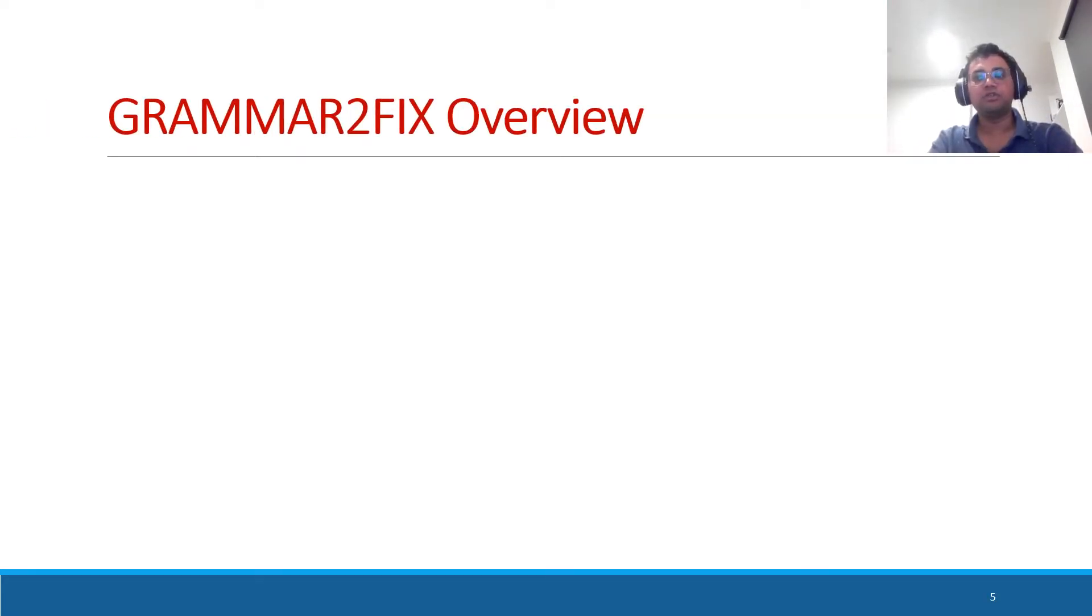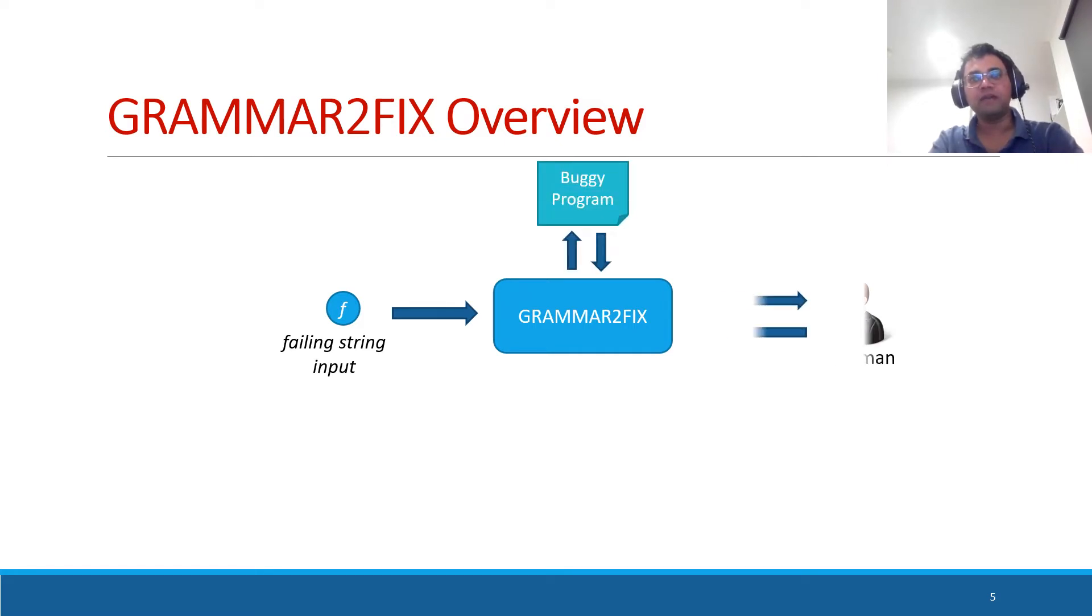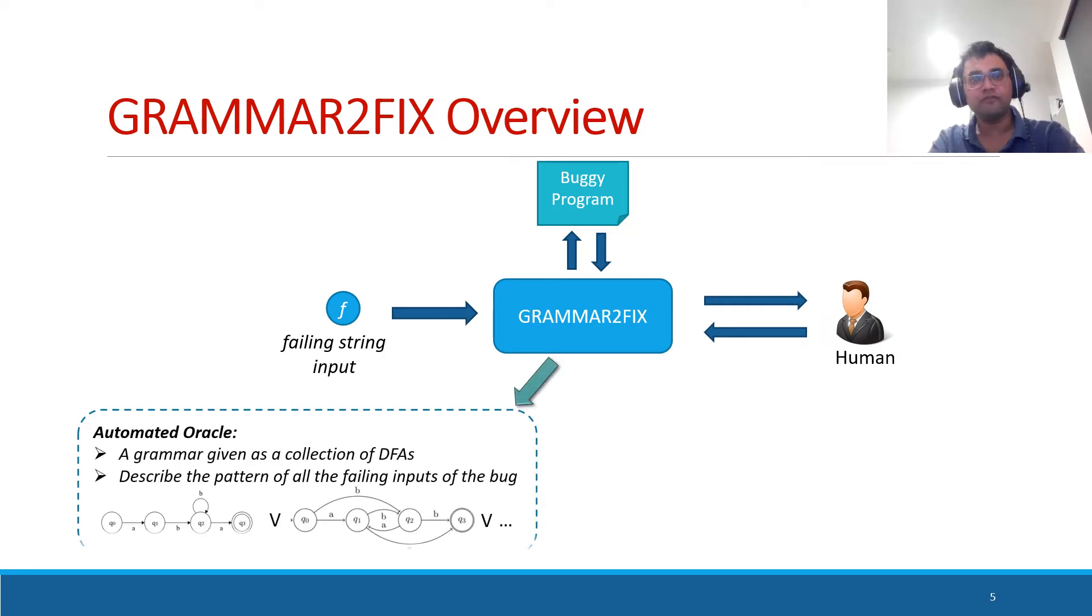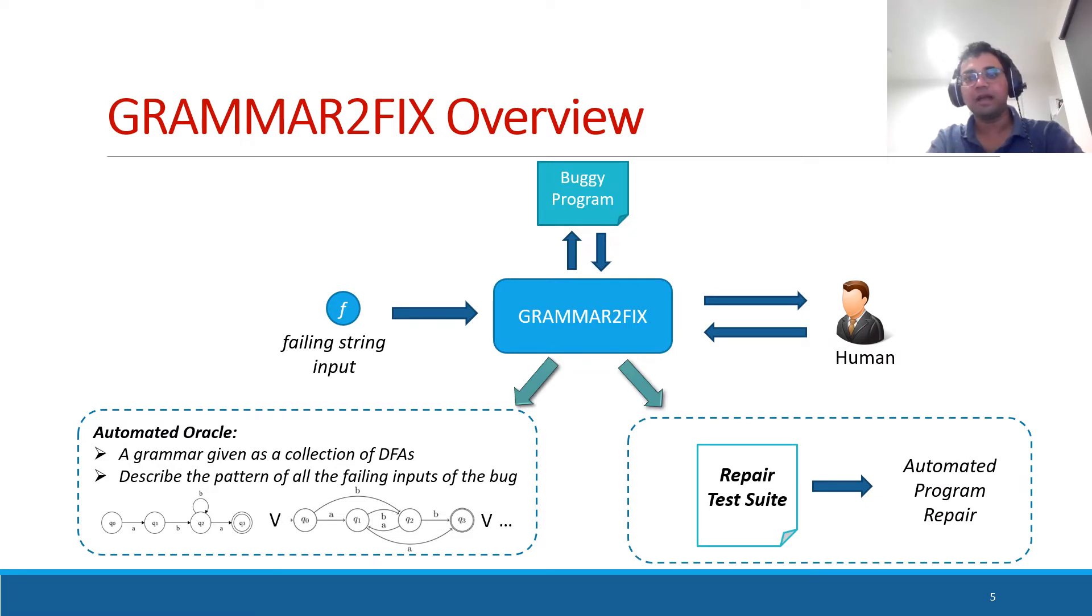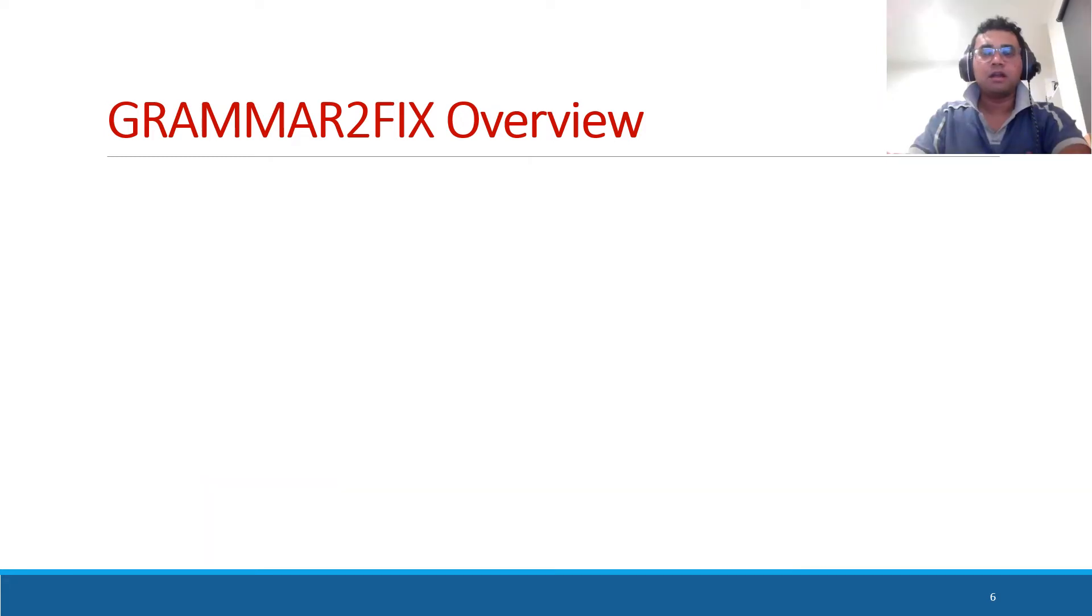Now let's look at our solution. Our solution is called Grammar2Fix. It uses a single failing string input of the bug. It interacts with the buggy program as well as with the human. At the end of the process, it produces an automated oracle, which is a grammar describing the pattern of all the failing inputs of the bug. And it is given as a collection of DFAs connected with disjunctions. At the same time, it produces a repair test suite which can be used with automated program repair.